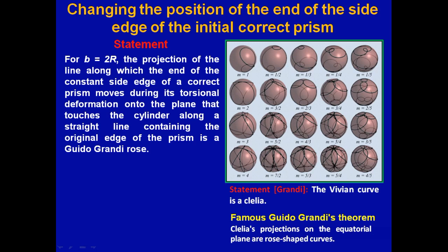the projection of the length, along which the end of the constant side edge of a correct prism moves, during its torsional deformations onto the plane that touches a cylinder along a straight line containing the original edge of the prism, is a Guido-Grande rose.